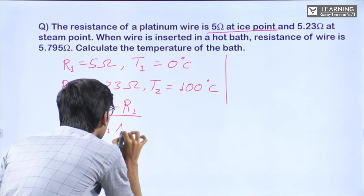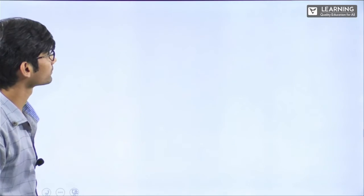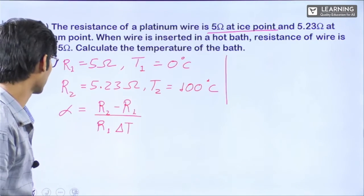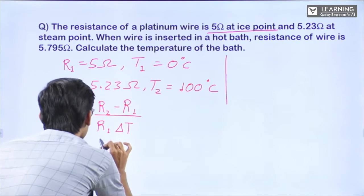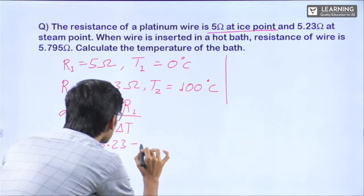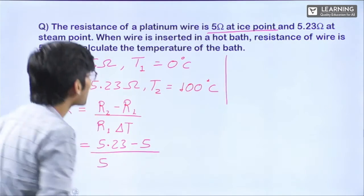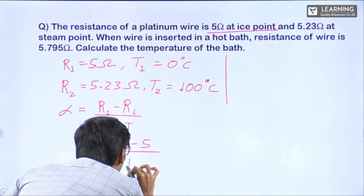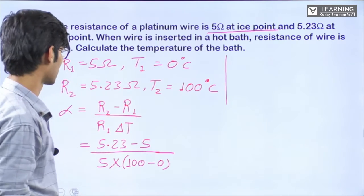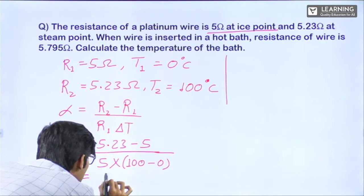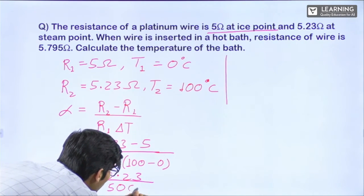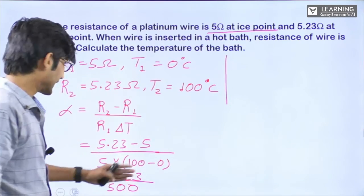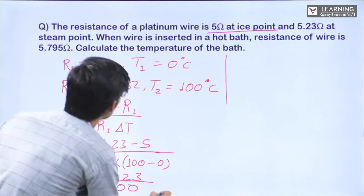Using α = (R₂ − R₁)/(R₁ × ΔT): α = (5.23 − 5)/(5 × (100 − 0)) = 0.23/500. This is our α in per degree Celsius. Now we need to find the temperature T₃ at which the resistance is 5.795 Ω.